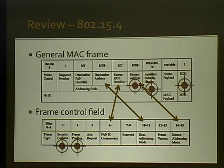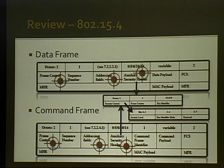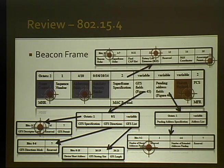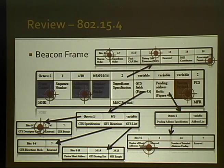We can't go through the specs in depth in 20 minutes, but we're happy to talk afterwards. This is the general MAC frame at the top — you see the frame control field split out below, sequence number, addressing. The data frame just has a payload. The FCS at the end is a non-cryptographic frame check sequence, just two bytes. The command frame adds a byte to identify the command type. Beacon frames get messier, with an optional security header, superframe specification, GTS field specifications, and pending address fields. All these fields are very interesting to experiment with.